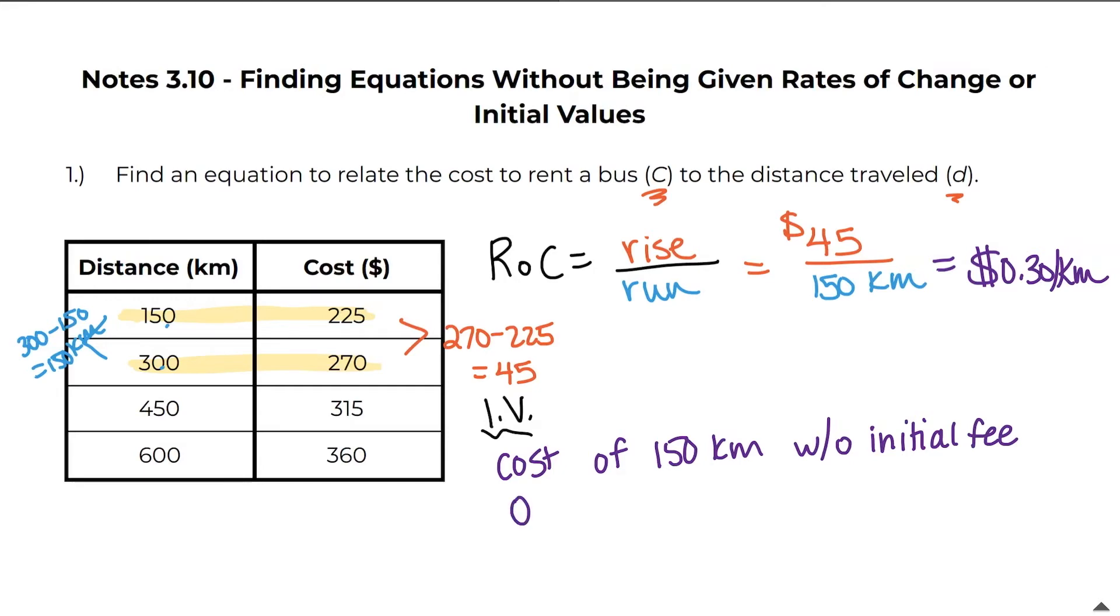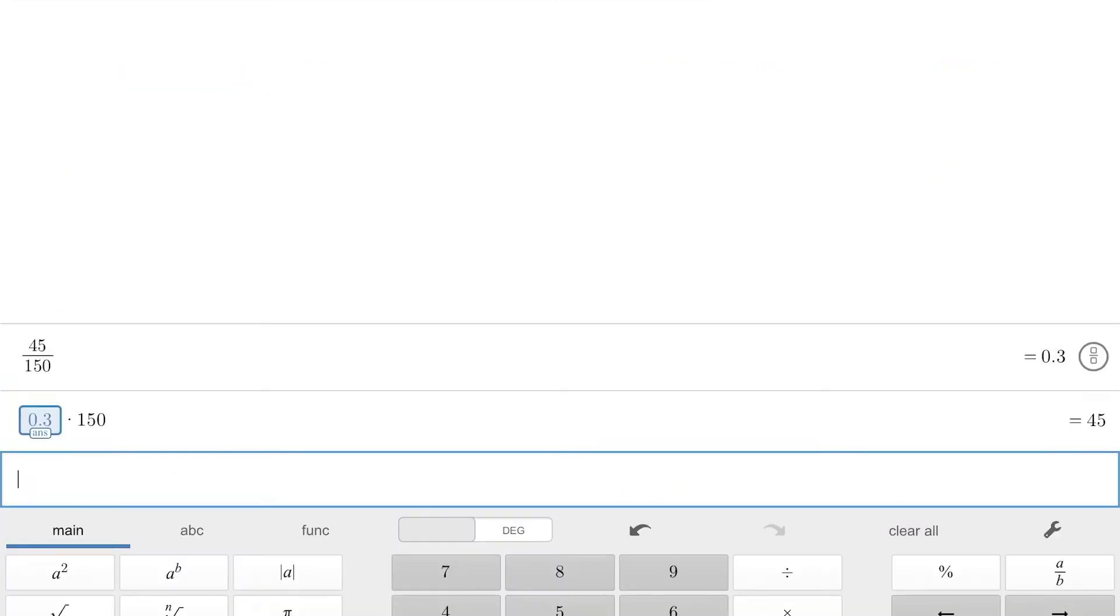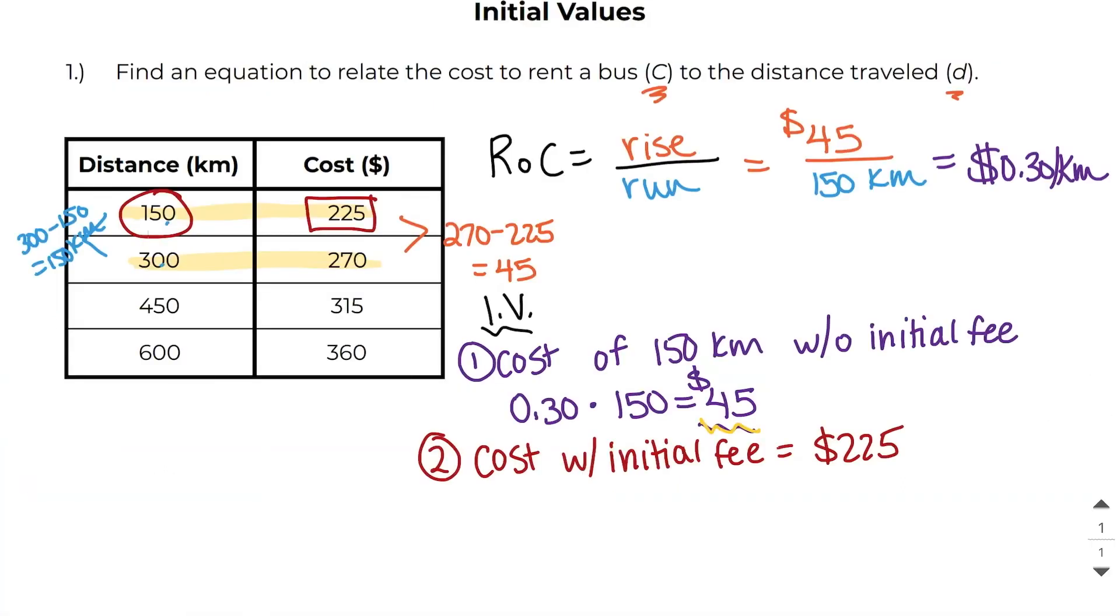Well we know that it costs 30 cents per kilometer and we're going for 150 kilometers. So I'm going to multiply 30 cents by 150 and I end up getting 45 dollars. But we know that our cost with the initial fee is 225 dollars. It's not really this 45 dollars here. So we have to figure out what the initial fee is.